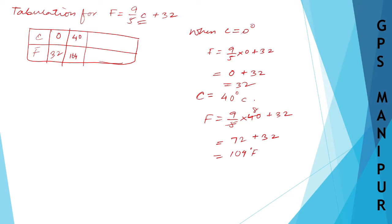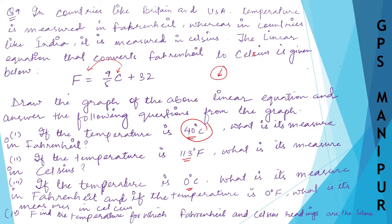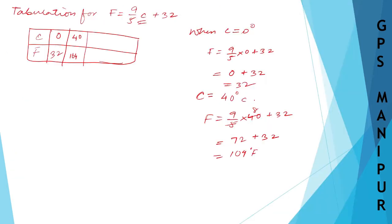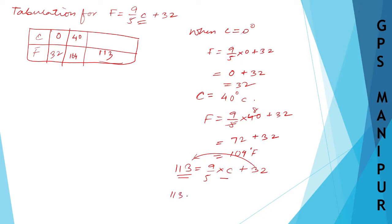Next, let us take F = 113. You can take any number — I'm taking this so calculations are easier. We put F = 113 into the equation: 113 = 9/5·C + 32. Transfer 32 to the other side: 113 − 32 = 9/5·C.